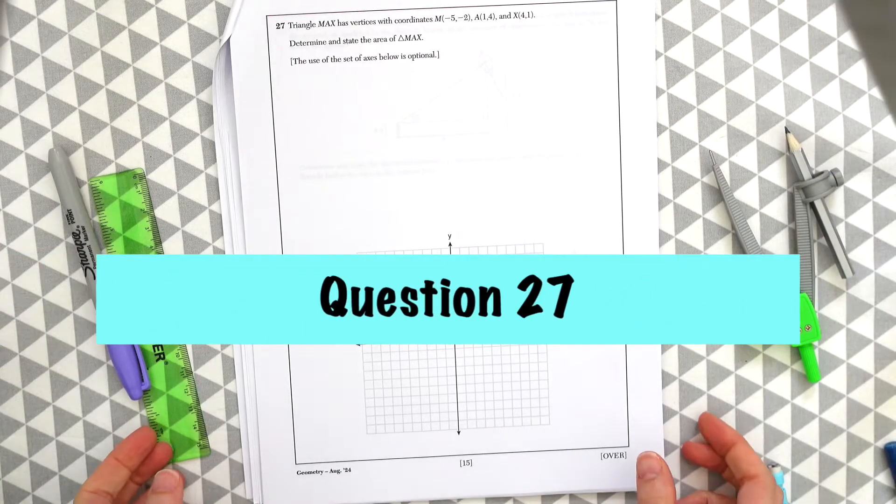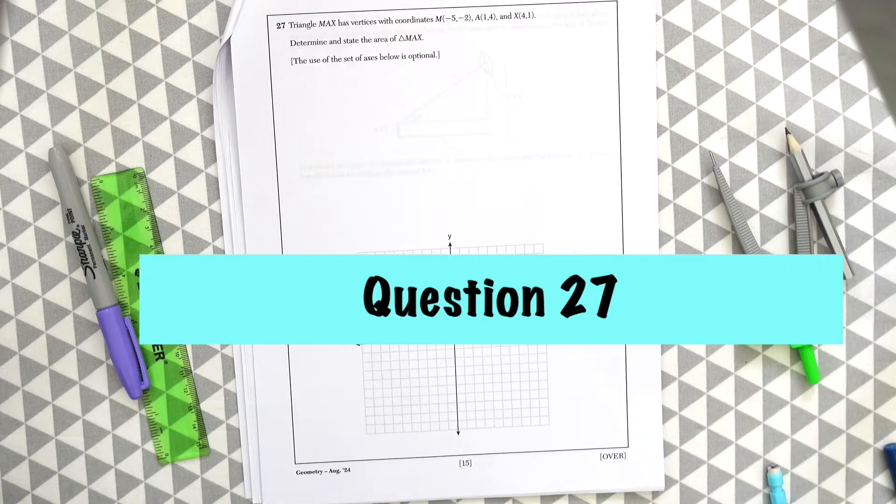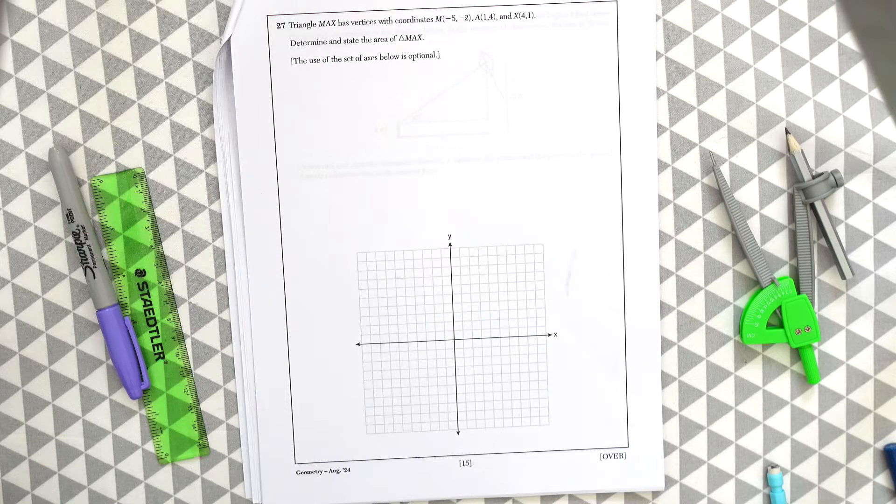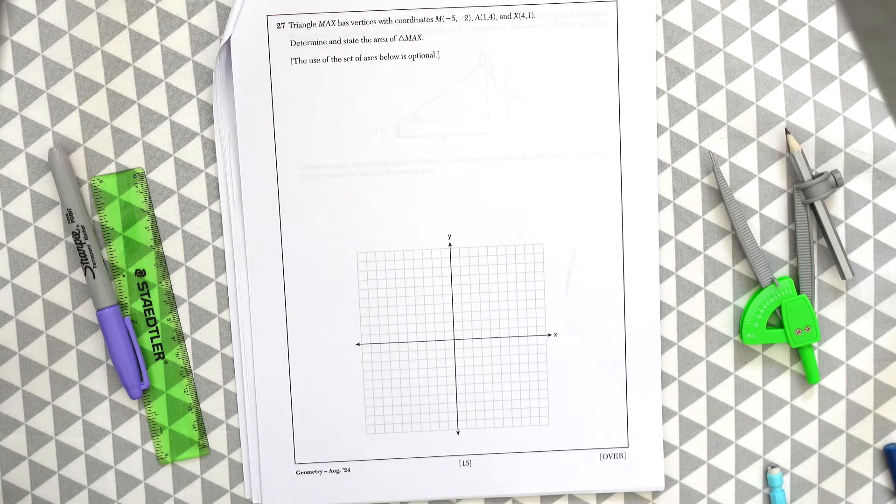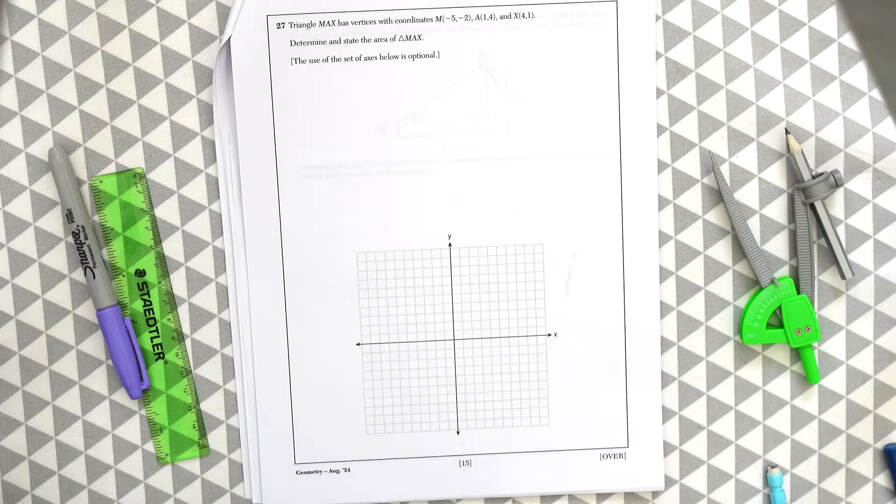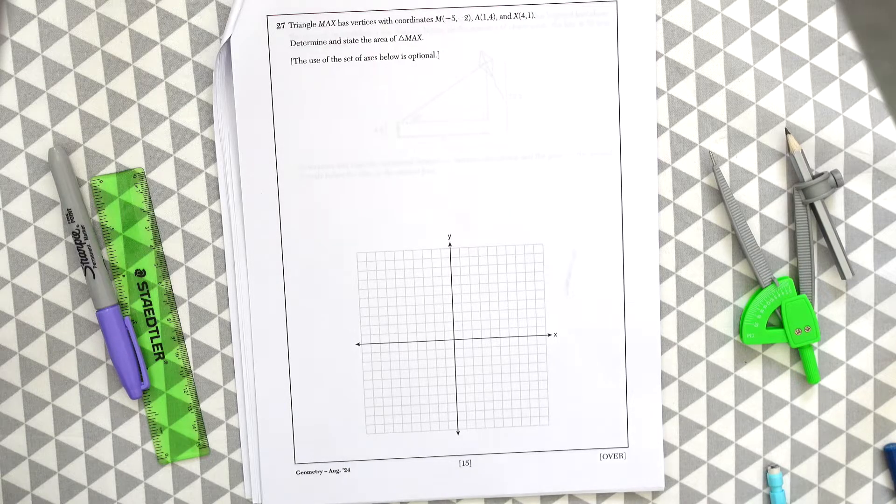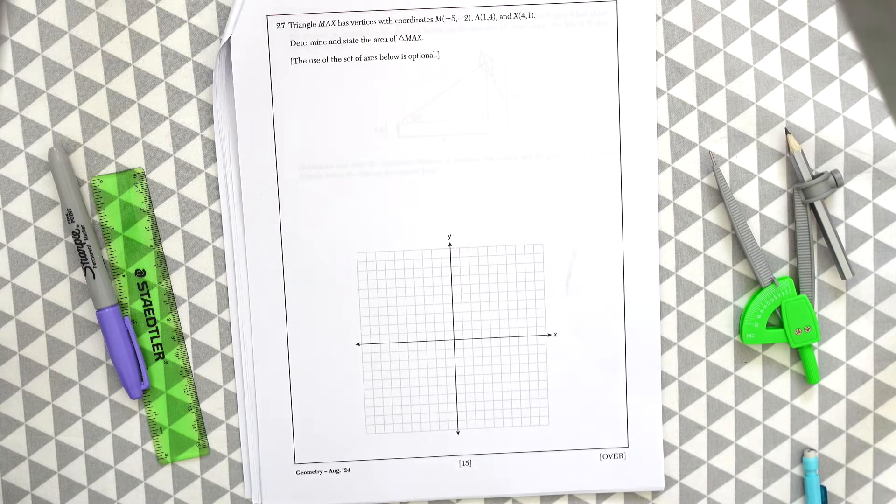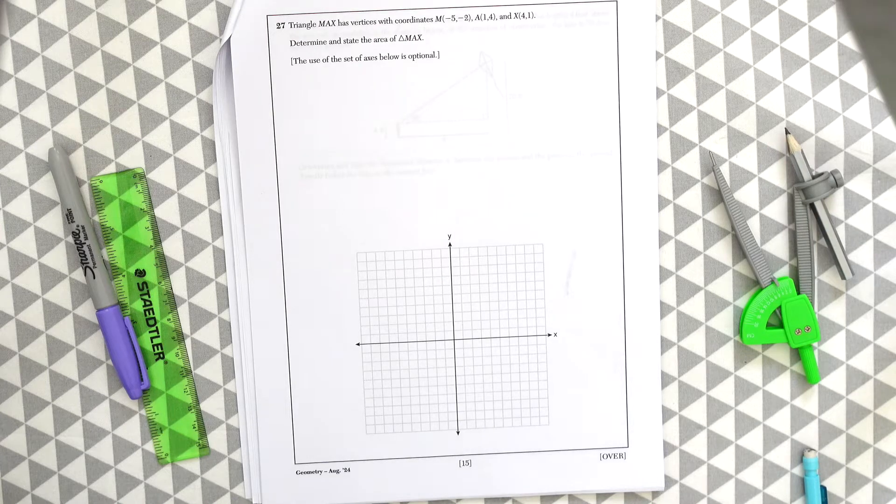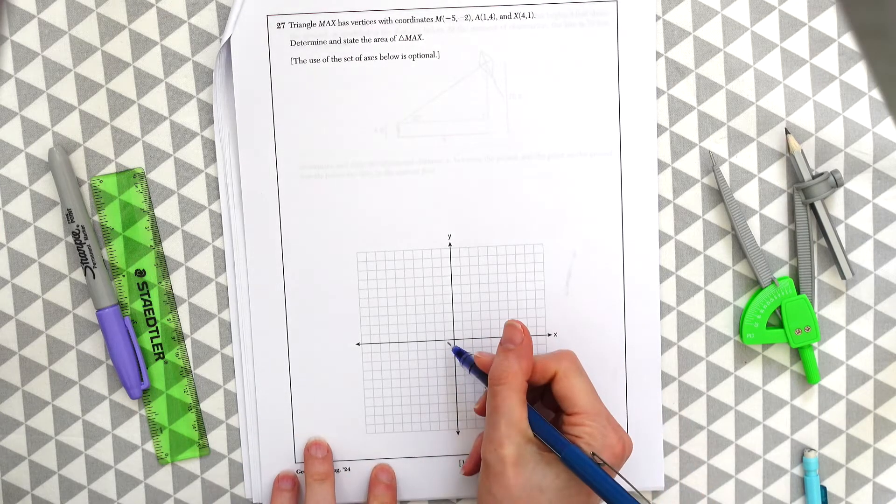Question 27. Triangle MAX has vertices with coordinates negative 5, negative 2, 1, 4, and 4, 1. Determine and state the area of triangle MAX. So first let's draw out this triangle. We have negative 5, 2.